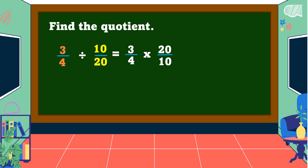Next, we're going to use the cancellation method first before we multiply both numerators and both denominators. So 20 and 10 have a common factor, which is equal to 10. 20 divided by 10 is equal to 2. 10 divided by 10 is equal to 1. Also, 4 and 2 have a common factor, which is equal to 2. 2 divided by 2 is equal to 1. 4 divided by 2 is equal to 2. Then we're going to multiply both numerators: 3 times 1 is equal to 3, and both denominators: 2 times 1 is equal to 2.